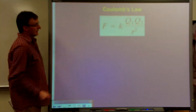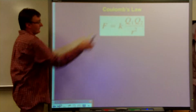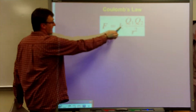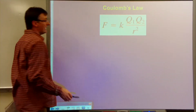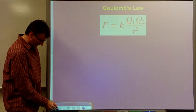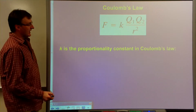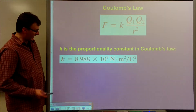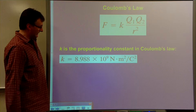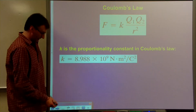So there's our formula, and it's very similar to gravity. The only difference is we have a different constant, and instead of mass, we have the charge. So k is the proportionality constant, and that equals 8.9 times 10 to the 9. Usually we just round it to 9, so it's 9 times 10 to the 9.